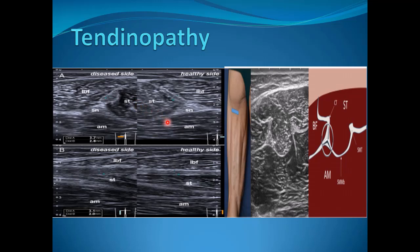In this example of tendinopathy, the healthy side shows the sciatic nerve and common tendon normally. On the diseased side, we notice increased thickness of the common tendon, also noted on longitudinal scan. Knowing the anatomy of this area allows us to pick up subtle pathology.